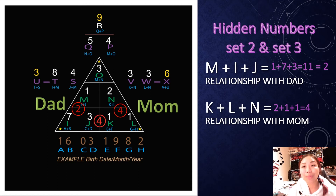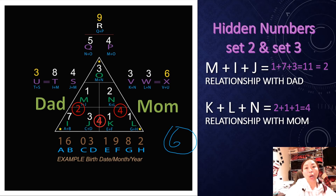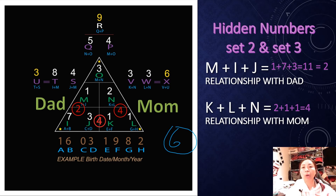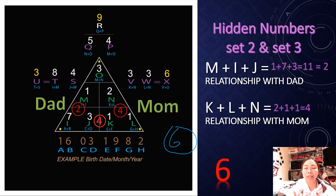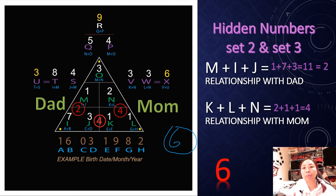If your number adds up to be a 6, the number 6 is the number of money. That means if it happens on your left side, when you're talking with your dad, your topic would always somehow end up surrounding money. It's not necessarily a bad thing — it's just what your conversation is focused on. Same thing if it happens on your mom's side: maybe she's always talking about money with you, or you're always talking about money with her.